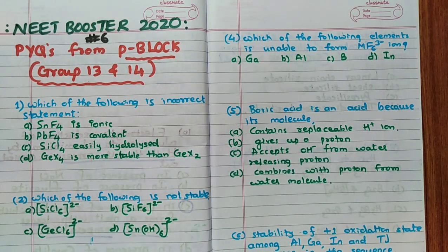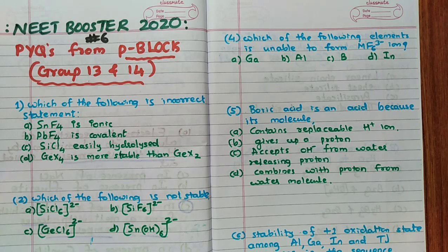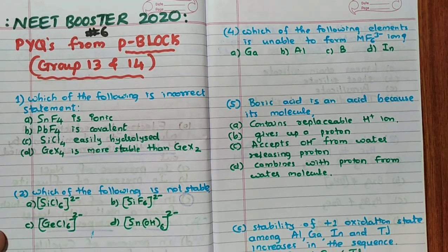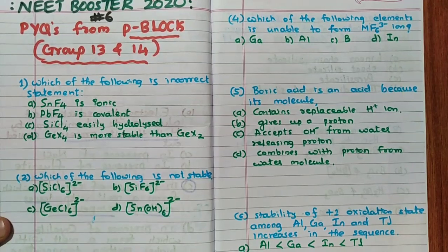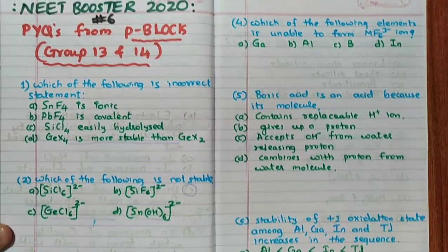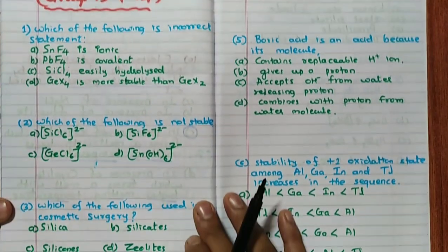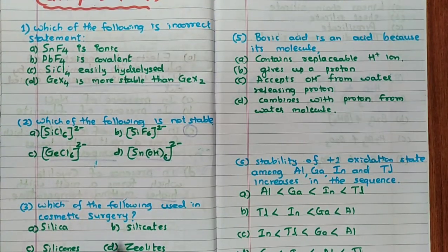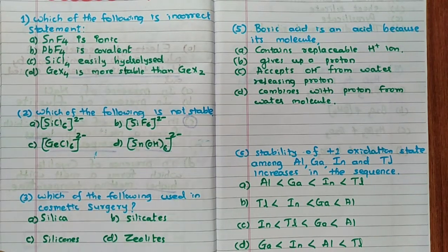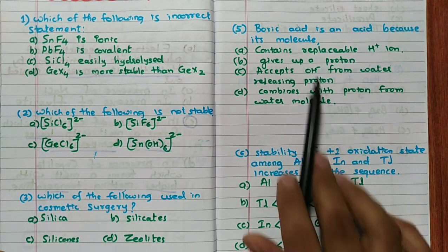I will show you all the questions for about 30 seconds so you can take a screenshot. Then you can solve those questions yourself, and after I solve them, you can cross-check how many are correct and how many are wrong. The first, second, and third questions are visible here.